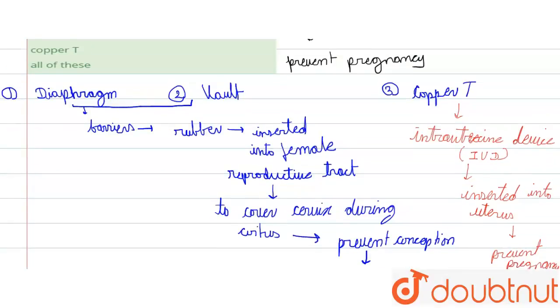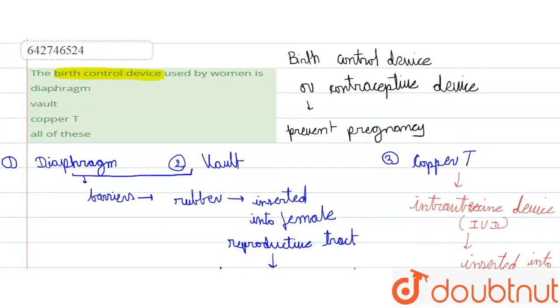And what was our question? Our question was the birth control device used by women. So diaphragm, vault, and copper T - all three are female contraceptive devices which are used to prevent pregnancy. So our answer will be all of these, the fourth option. I hope you understand this video. Thank you.